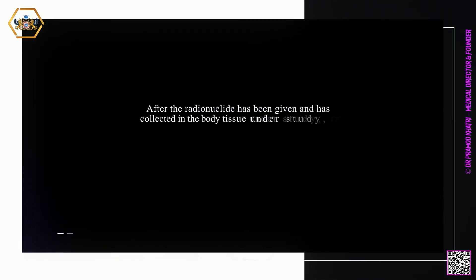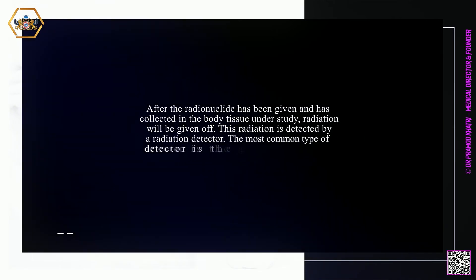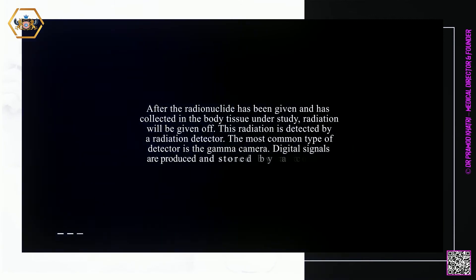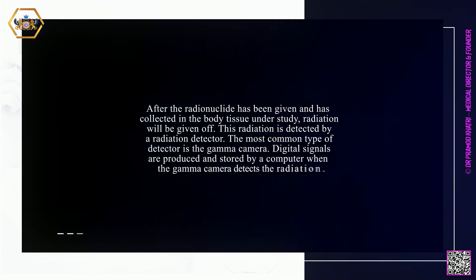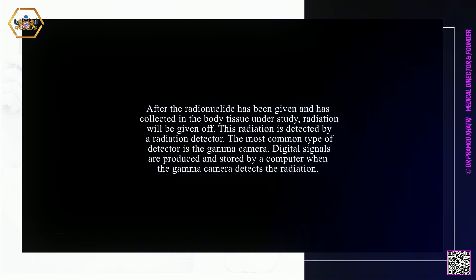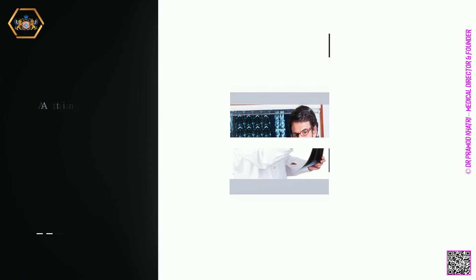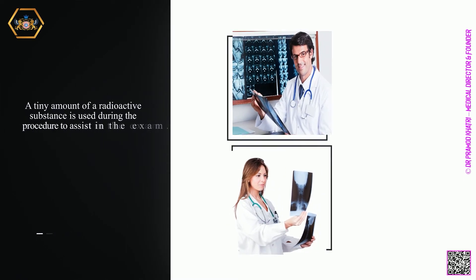This radiation is detected by a radiation detector. The most common type of detector is the gamma camera. Digital signals are produced and stored by a computer when the gamma camera detects the radiation. A tiny amount of a radioactive substance is used during the procedure to assist in the exam.